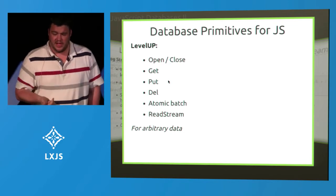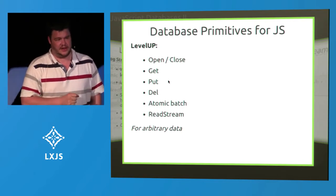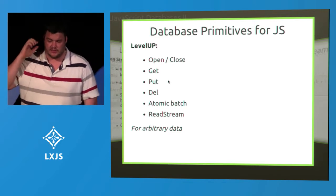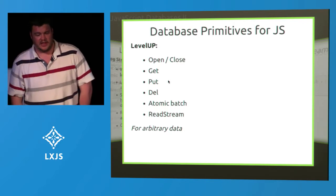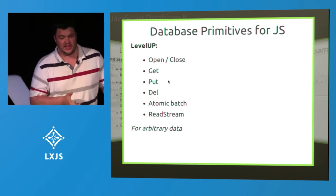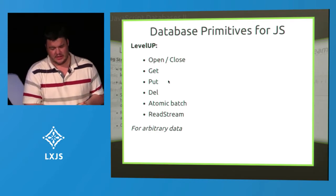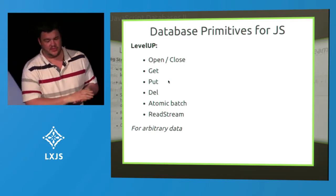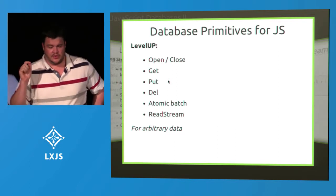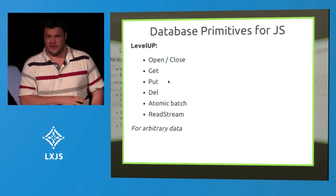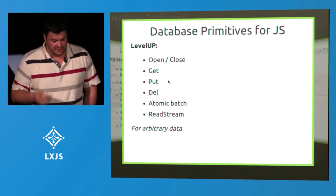Using LevelDB as inspiration, we've whittled down to what are the absolute essential primitives needed to build complex database systems in JavaScript. The list we've ended up with is: open and close, get, put and delete — arguably you don't need a delete but we've got it there for explicitness — an atomic batch, and a read stream. This is all for arbitrary data, so binary data as well as text or JavaScript objects. The atomic batch and the read stream are probably the interesting ones.